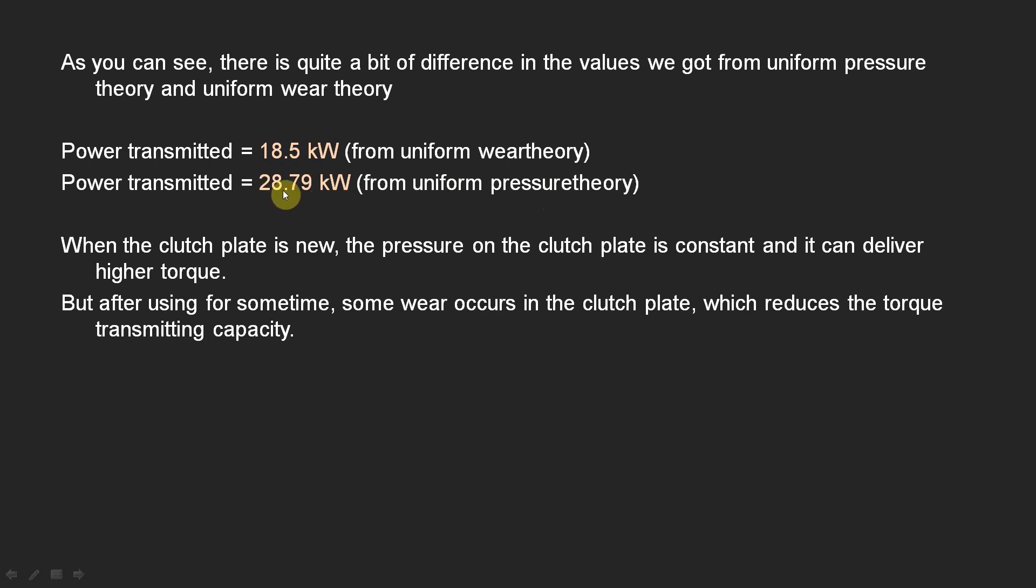In uniform wear theory we got 18.5 kilowatts, and in uniform pressure theory we got 28.79 kilowatts. There is approximately 10 kilowatt difference in both the theories. So the explanation is: when the clutch plate is new, the pressure on the clutch plate is constant and it can deliver higher torque. But after using some time, some wear occurs in the clutch plate, which reduces the torque transmitting capacity.